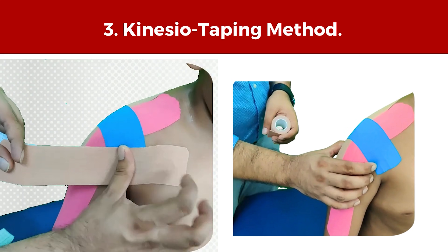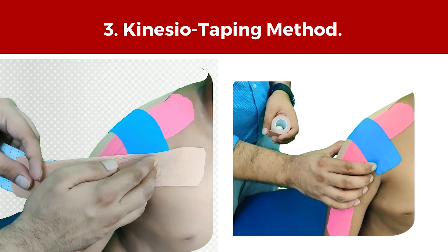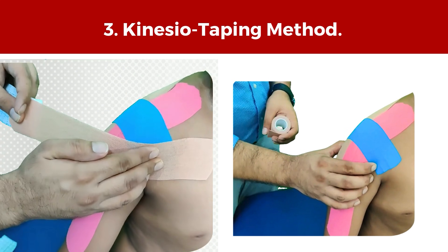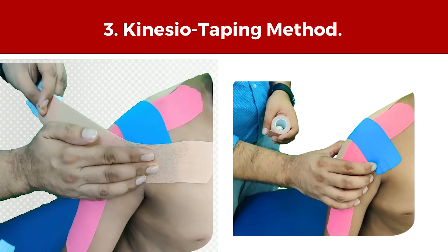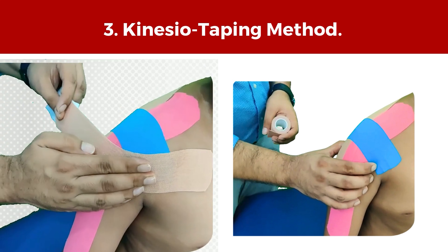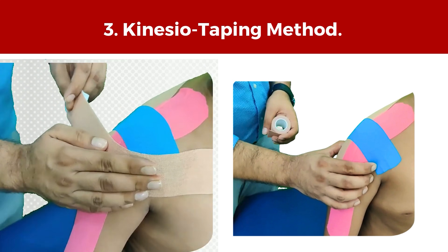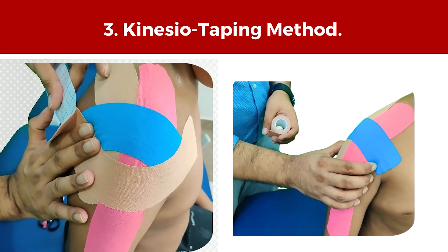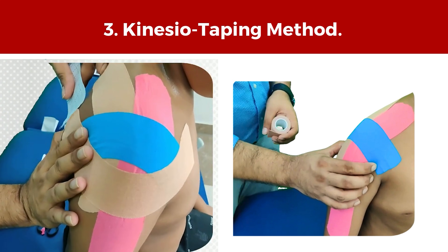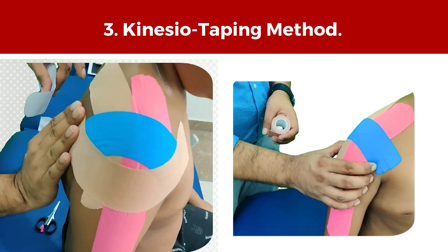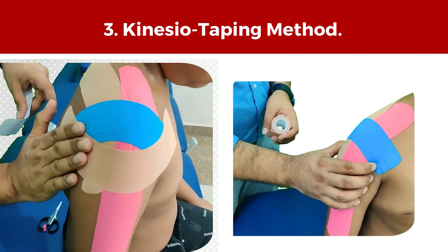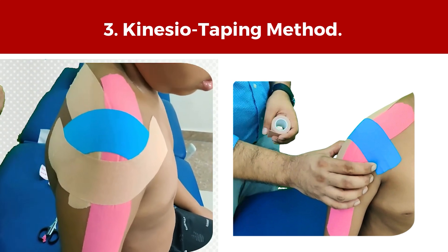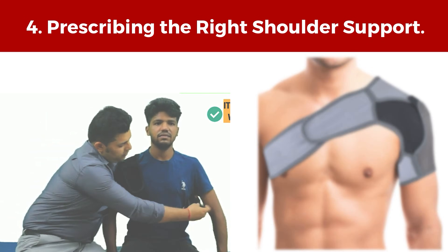Kinesio taping is another innovative approach that can be used on the affected shoulder to achieve many benefits such as stabilization, proprioception, and pain relief. To watch the full technique on how to apply this tape, the link is provided in the description.